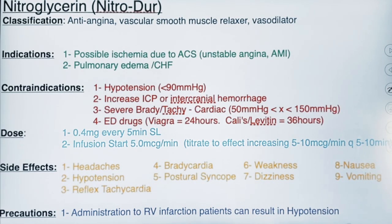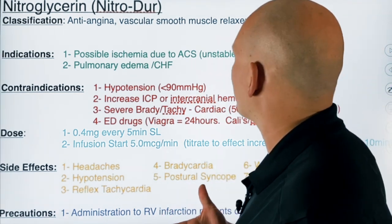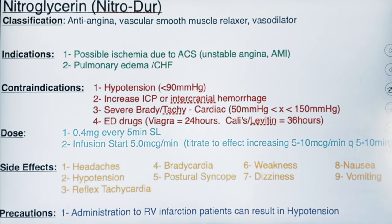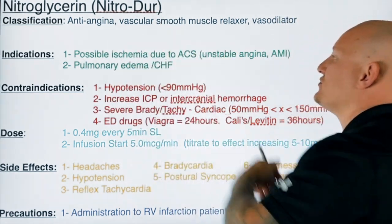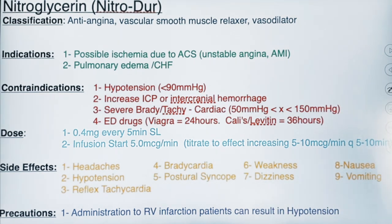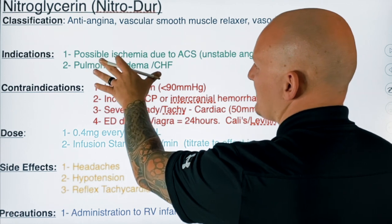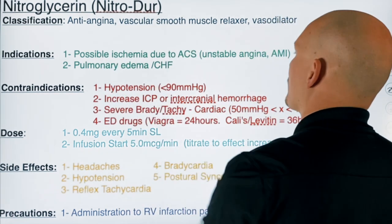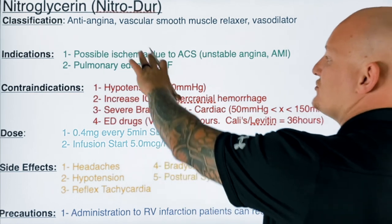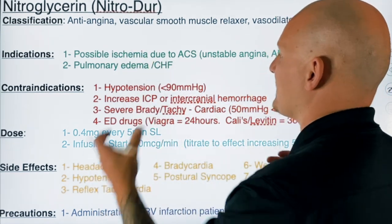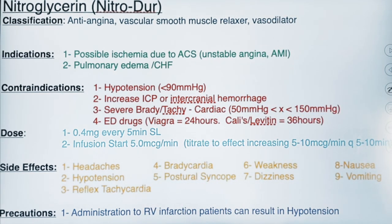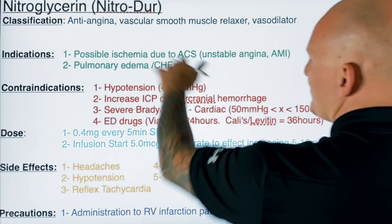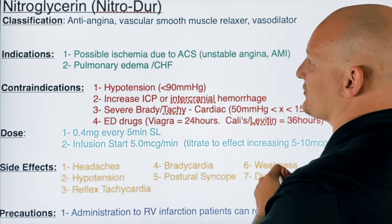As far as its class, nitroglycerin is considered an antianginal, a smooth muscle relaxer, or vasodilator. Its indications are almost exclusively possible ischemia due to ACS, or acute coronary syndrome. It can also be used in pulmonary edema and CHF, again all due to an acute coronary syndrome problem, since its vasodilation properties can help a pulmonary edema patient who could be drowning in their own fluids from a serious CHF or acute myocardial infarction.